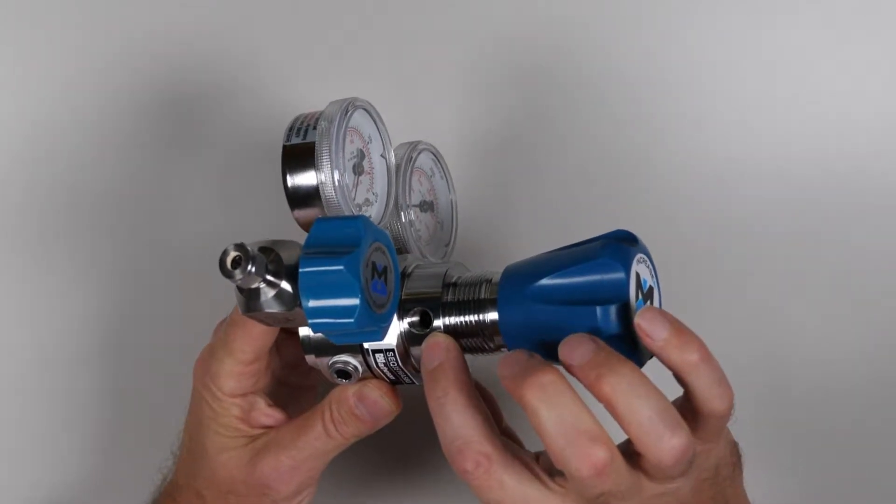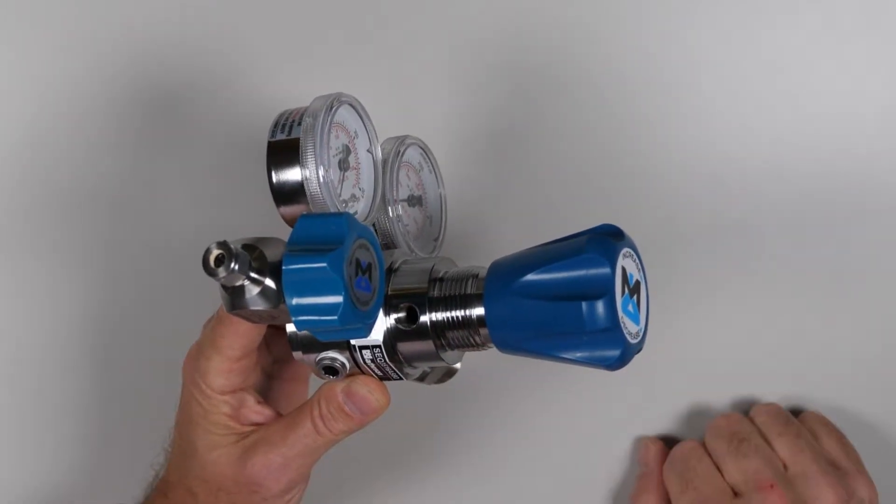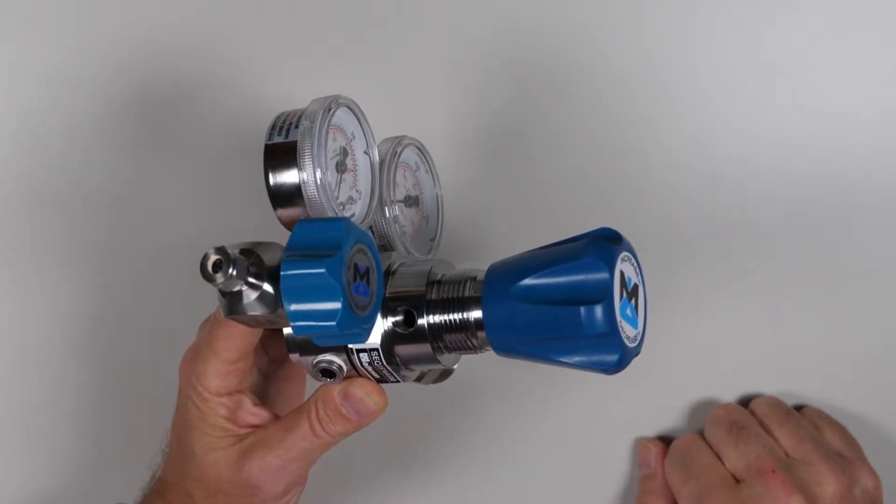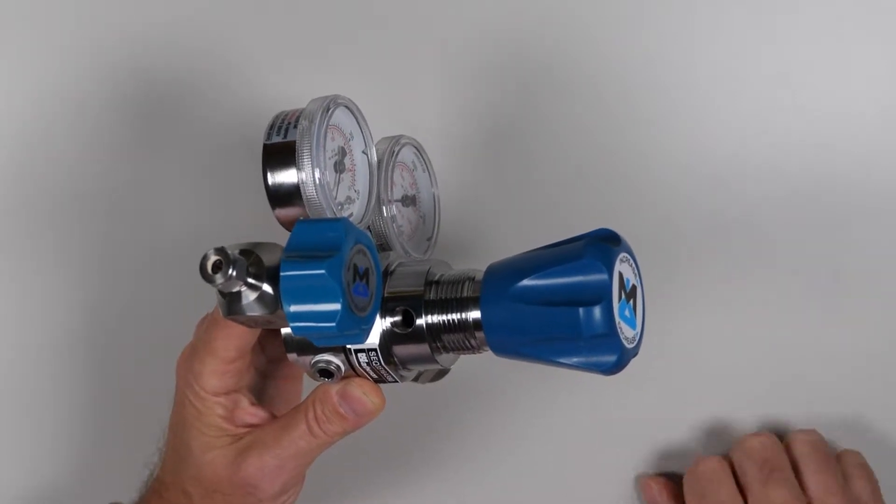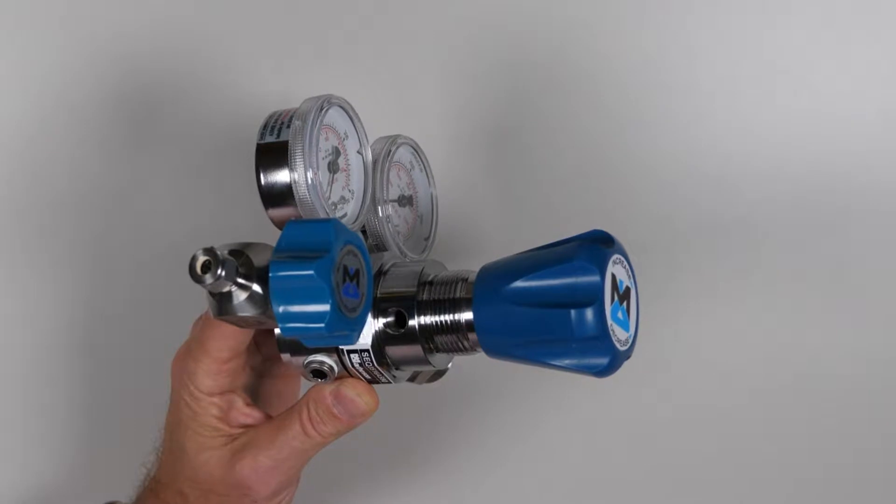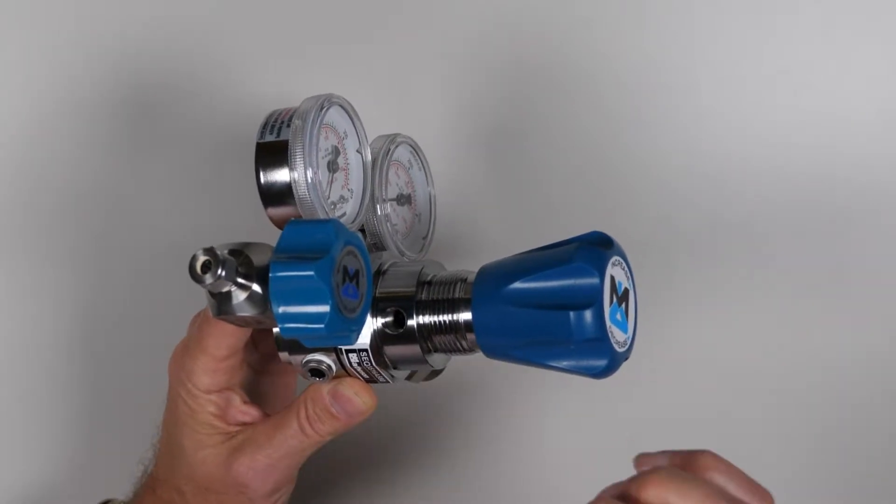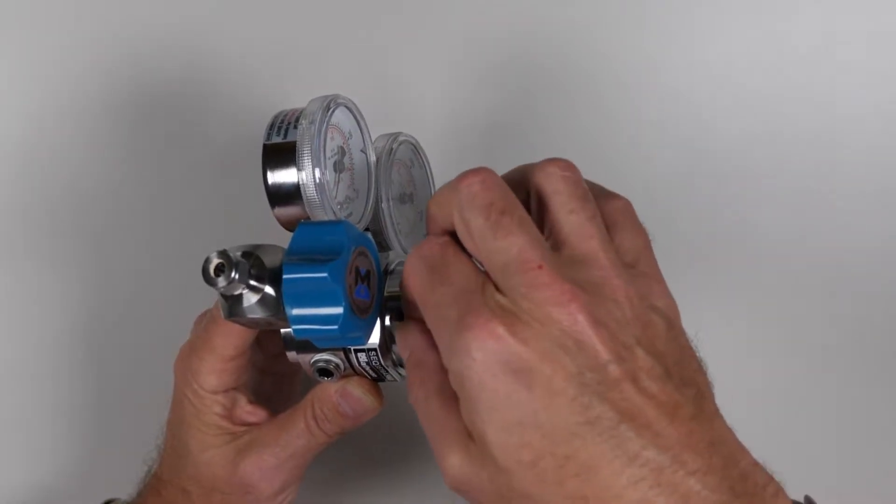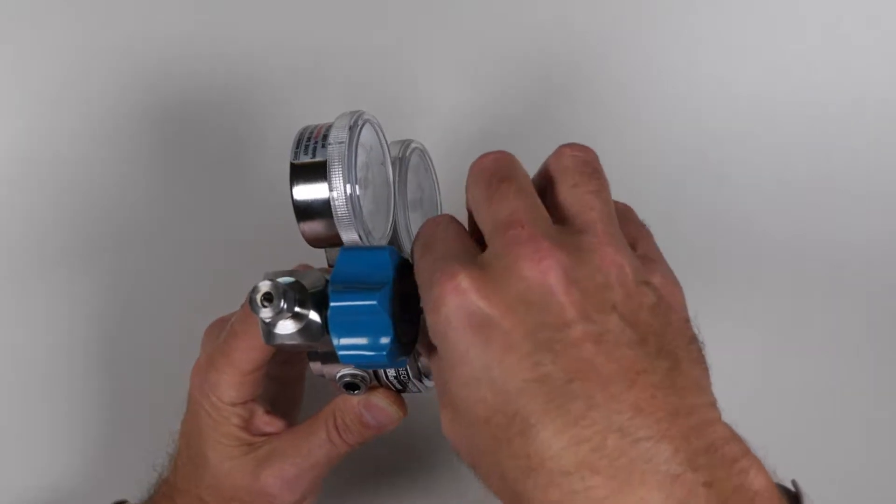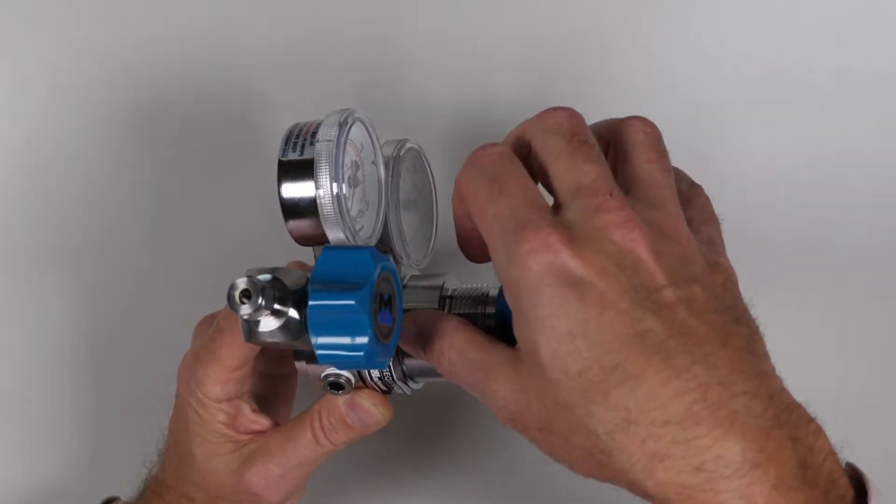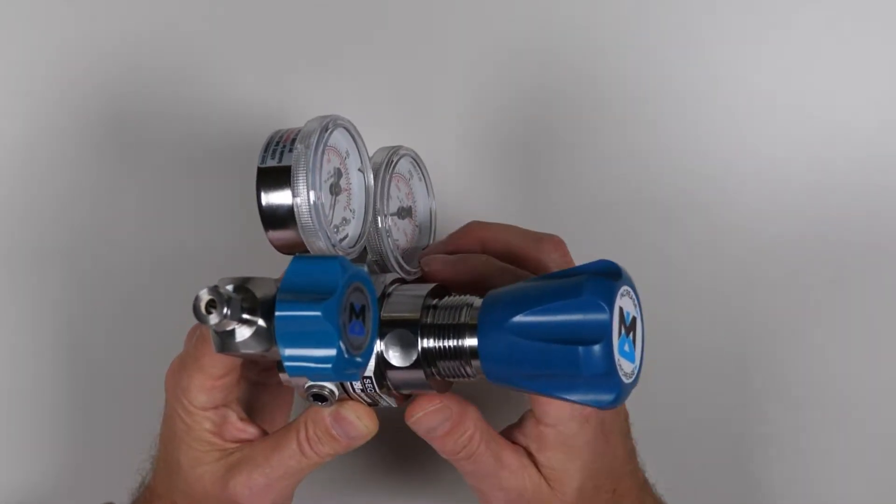The bonnet has a vent hole which is a safety feature that protects the bonnet from over pressurization if there's ever a leak past the diaphragm. The bonnet vent hole should never be plugged. Many of our pressure regulators have a sticker over the bonnet vent hole which will blow off easily should gas need to escape through the bonnet vent hole.